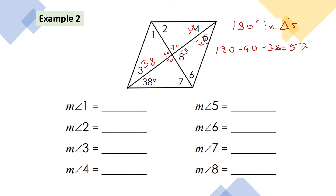Angle 6 is 52 and angle 7 is 52, because the diagonals bisect the angles. Angles 1 and 2 are also 52 because opposite angles are congruent. So: angle 1 = 52°, angle 2 = 52°, angle 3 = 38°.